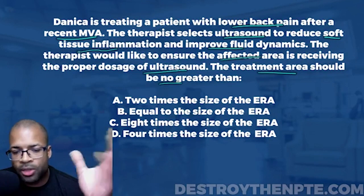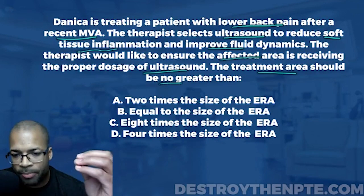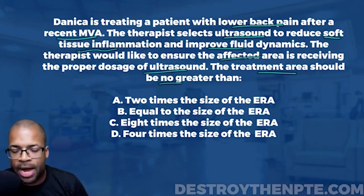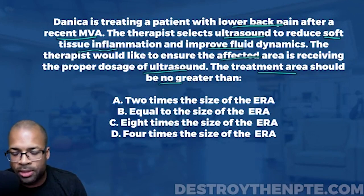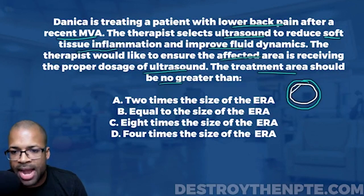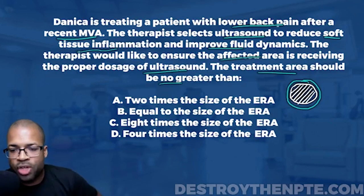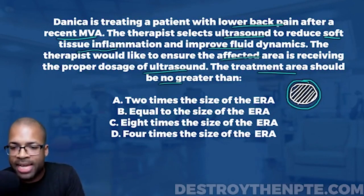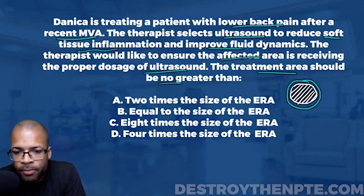Let's go over the effective radiating area principle. Envision the ultrasound head — that circular thing at the top of the transducer. Inside that ultrasound head, there's a specific space from which the ultrasonic waves actually emit. The entire ultrasound head does not produce ultrasound waves; only a part of it does. That active portion is called the effective radiating area, or ERA.